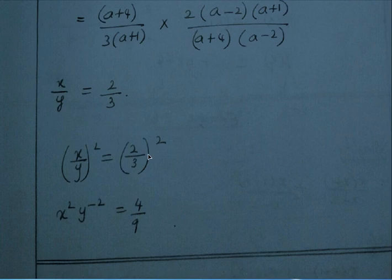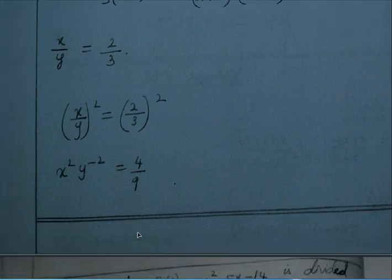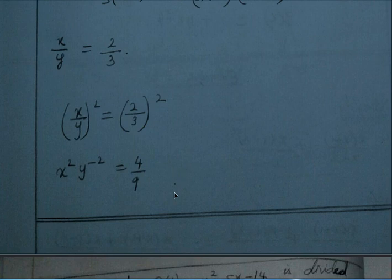So x/y = 2/3, and (x/y)² = (2/3)² = 4/9. Therefore, x² · y⁻² is equal to 4/9.